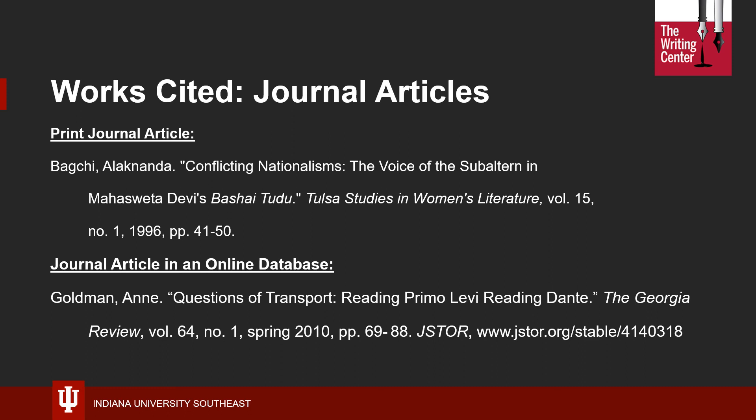You may also use the DOI in place of the URL if one is provided. The DOI is the digital object identifier, and it is a series of numbers provided uniquely to each journal article. Someone searching for an article will be able to find it using either the stable URL or the DOI, so you may use either one.